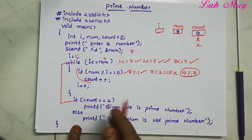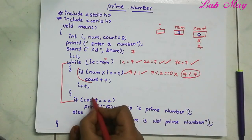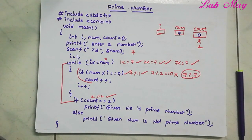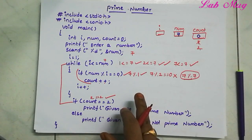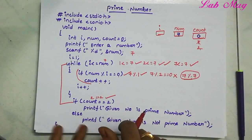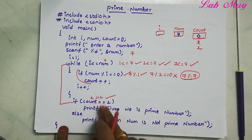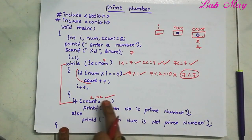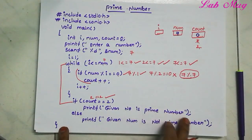After the loop, we check: if count equals 2, then the given number is a prime number. For number 7, count is 2, so condition is true — output: given number is prime number. If count is more than 2, for example for 4 which has 3 factors, or 6 which has 4 factors, condition is false and we print: given number is not a prime number.